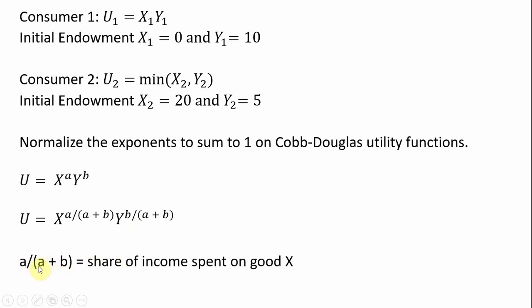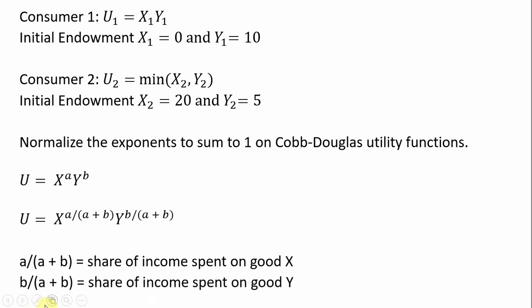The a divided by (a plus b) will represent the share of income spent on good x, and the b divided by (a plus b) will represent the share of income spent on good y. Using this useful property will simplify the mathematics for the Cobb-Douglas utility function.